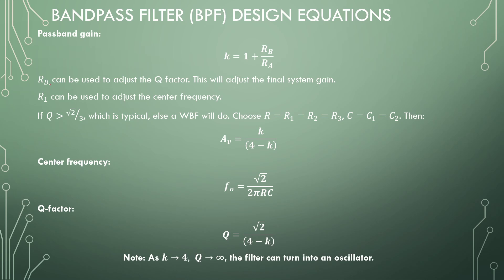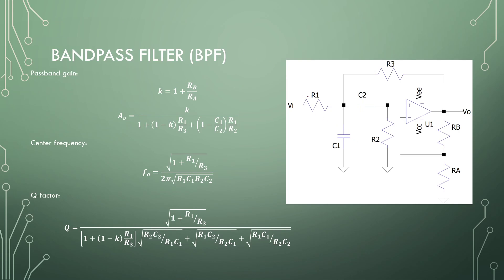Right, so RB can be used to adjust the Q-factor, and R1 can be used to adjust the center frequency. So this resistor right here, if your frequency is a bit off you can tune it, and this resistor right here, if your bandwidth is too wide or too narrow, you can adjust RB's value. So if you're struggling to get things right, remember that you can just adjust these two components in your design.